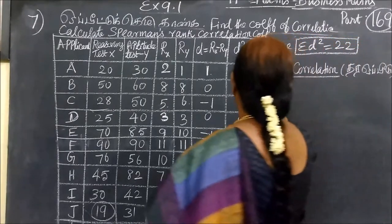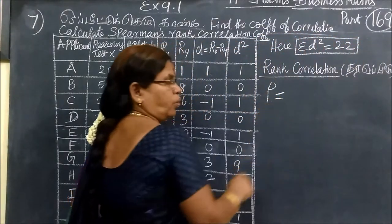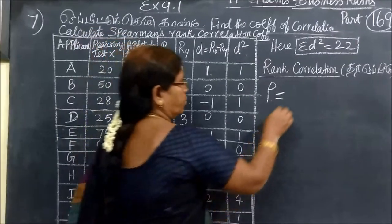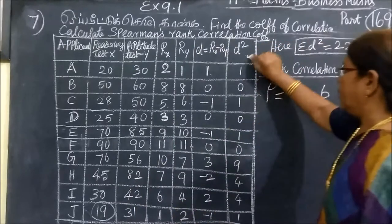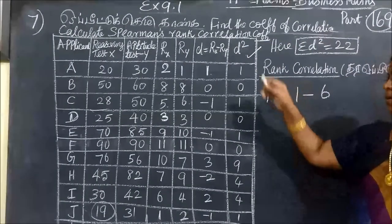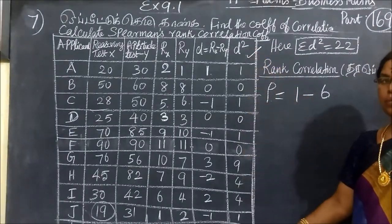Rank correlation. This is rho. This is rho of rank. Equal to 1 minus 6 sigma d squared. If you are not going to do it, this is the last time. This is the formula.